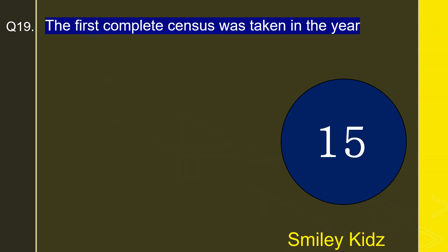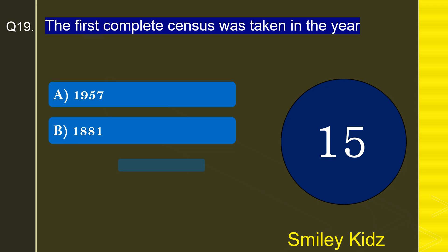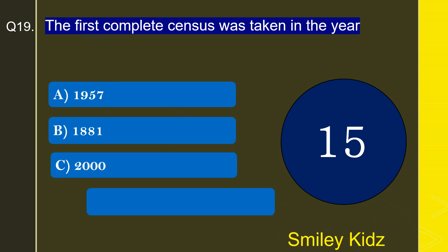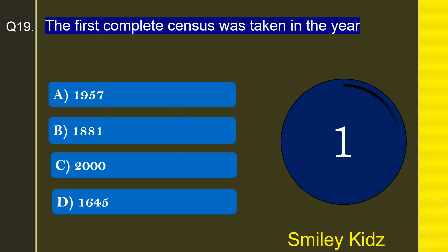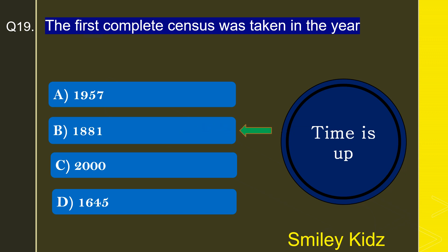Moving to question number 19: The first complete census was taken in the year — 1957, 1881, 2000, or 1645? The correct answer is 1881. The first complete census was taken in the year 1881.